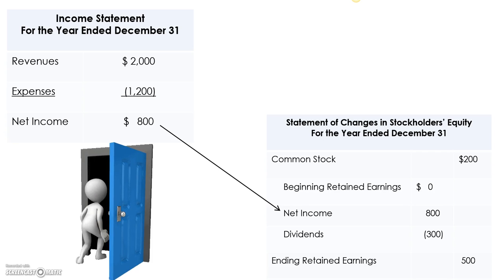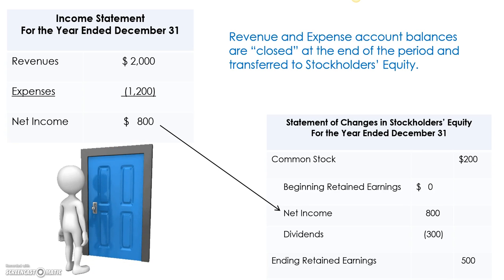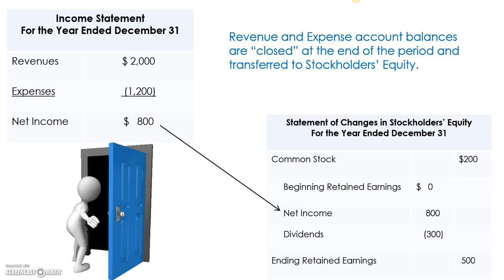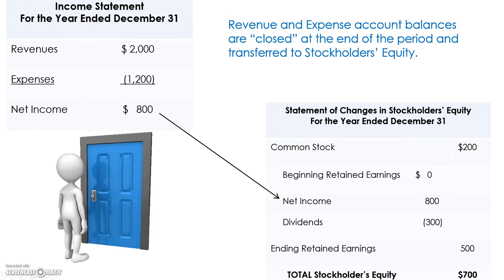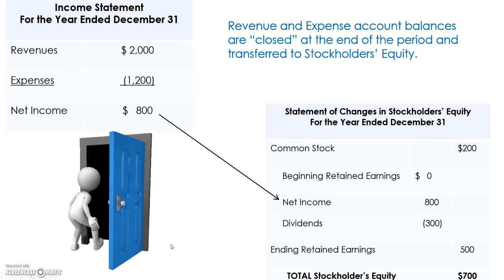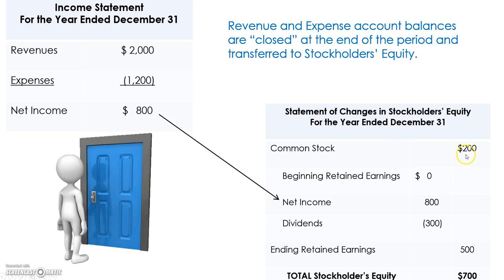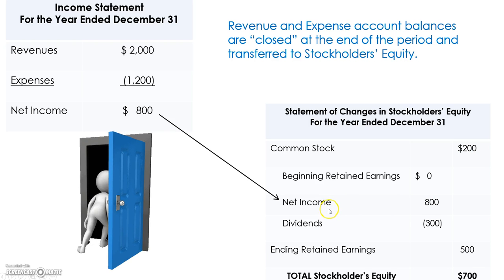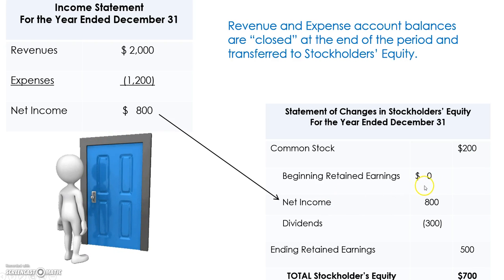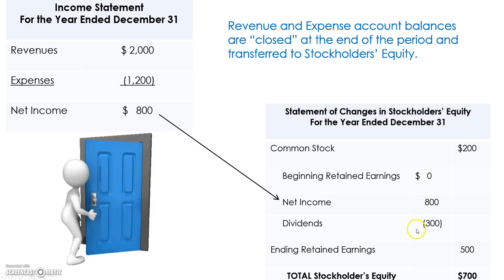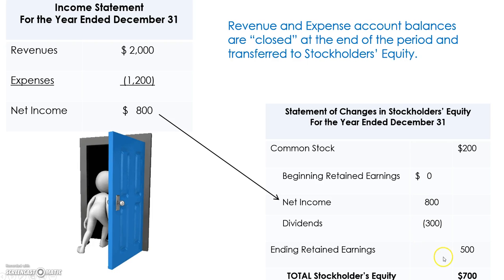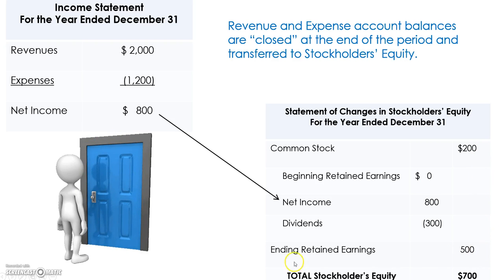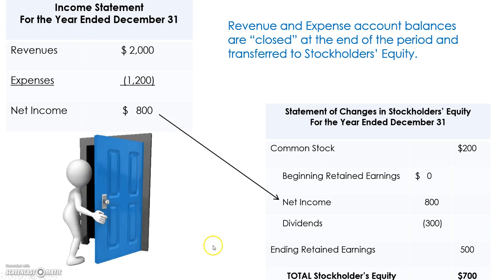We can take the retained earnings statement and fit it into a broader stockholders' equity statement. The stockholders' equity statement includes both components — common stock, as you can see on the bottom left-hand side, and retained earnings, which is a mini statement built in where we started with zero, added $800, minus $300 in dividends. You can see the two components: $200 plus $500 equals total stockholders' equity of $700.